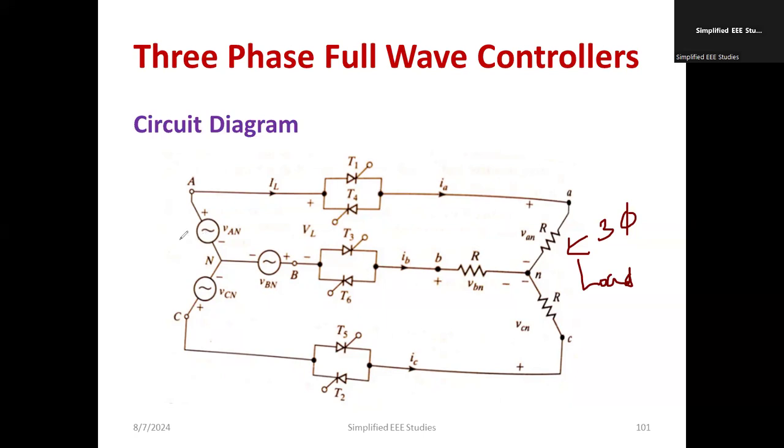Now we have the source part. VAN, VCN, VBN are the phase voltages. VAC, VAB, VBC are all called line voltage because it's a three-phase system. Since it's a high-voltage application, we connected the supply in the form of a star connection. We can go for delta connection as well.